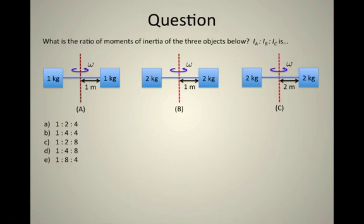In case A, I have two one kilogram masses one meter away from the axis of rotation. In case B, I have two two kilogram masses one meter away. And in case C, I have two two kilogram masses but they're each two meters away.